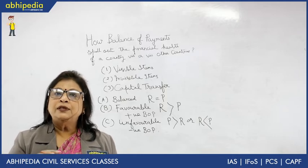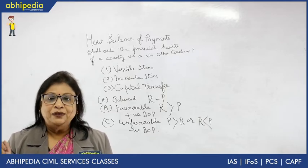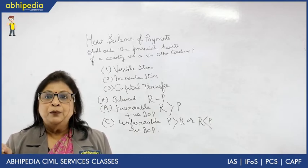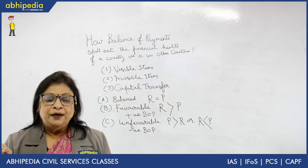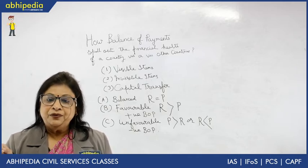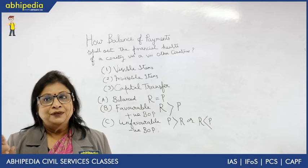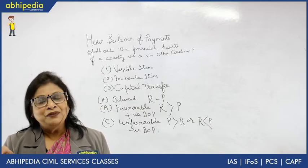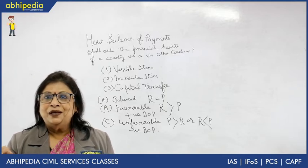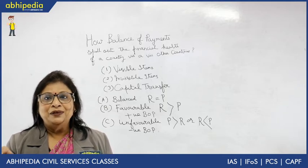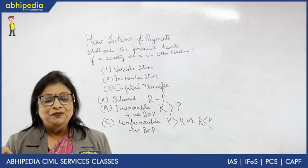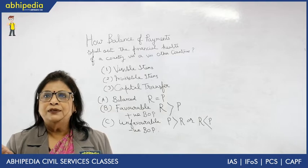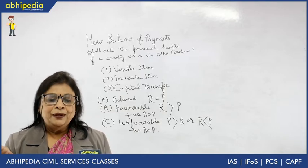We have another concept called balance of trade. Balance of trade means we only speak about the export and import of visible items — that is what is known as balance of trade. Balance of payment, on the other hand, includes visible items, invisible items, and also capital transfer — that is capital inflows and capital outflows.